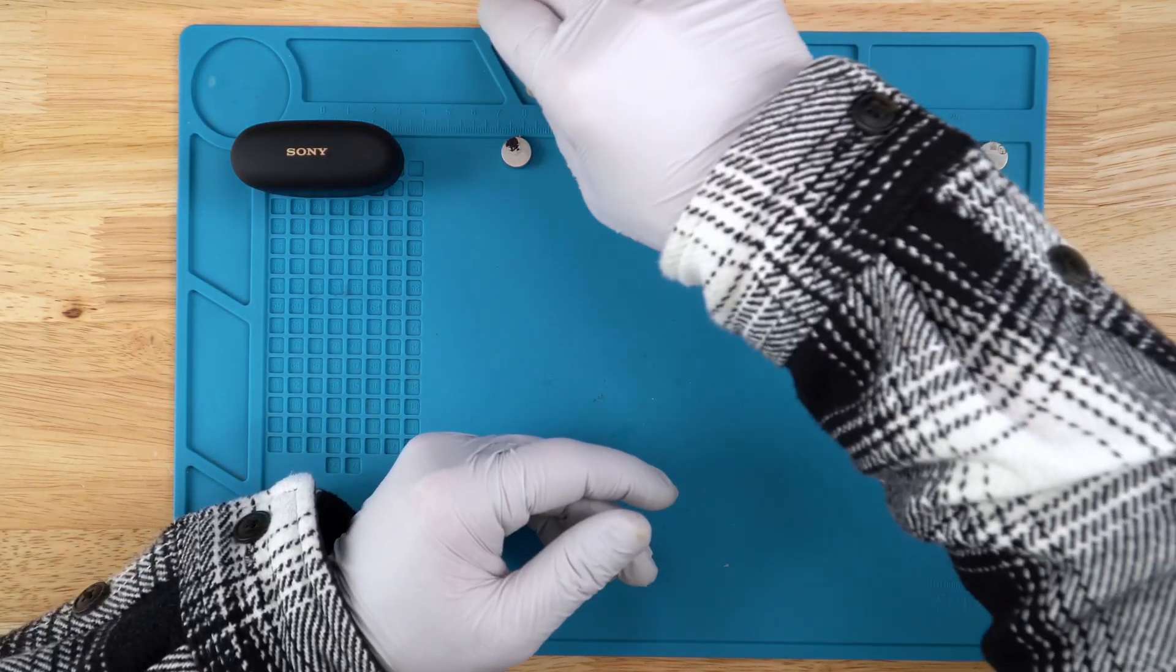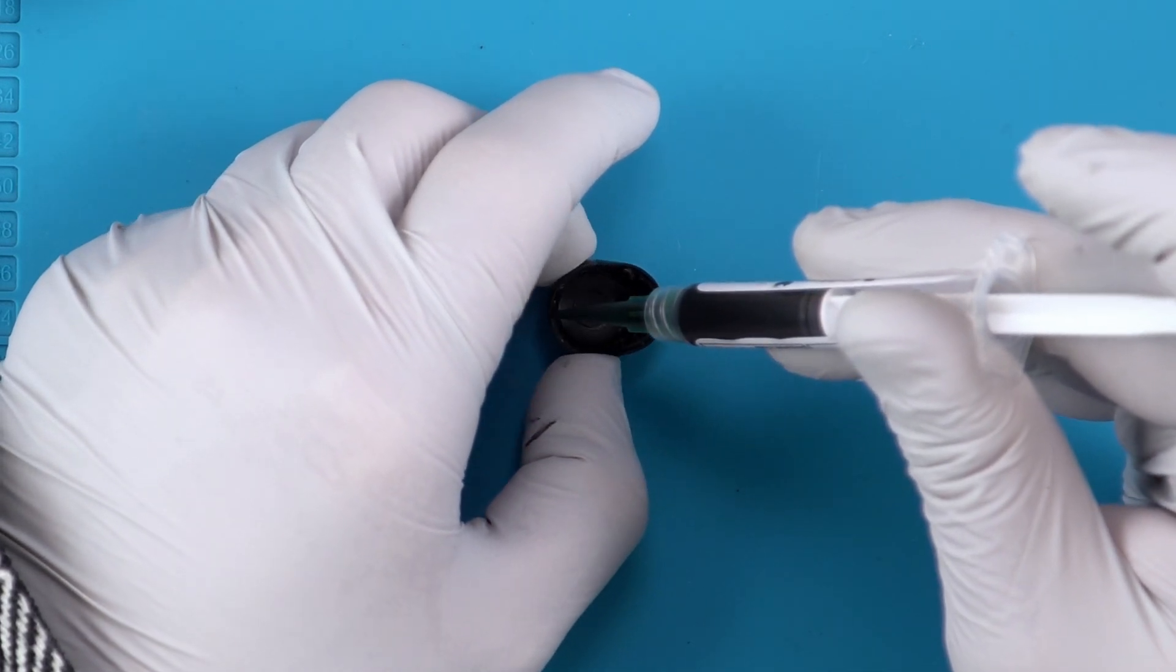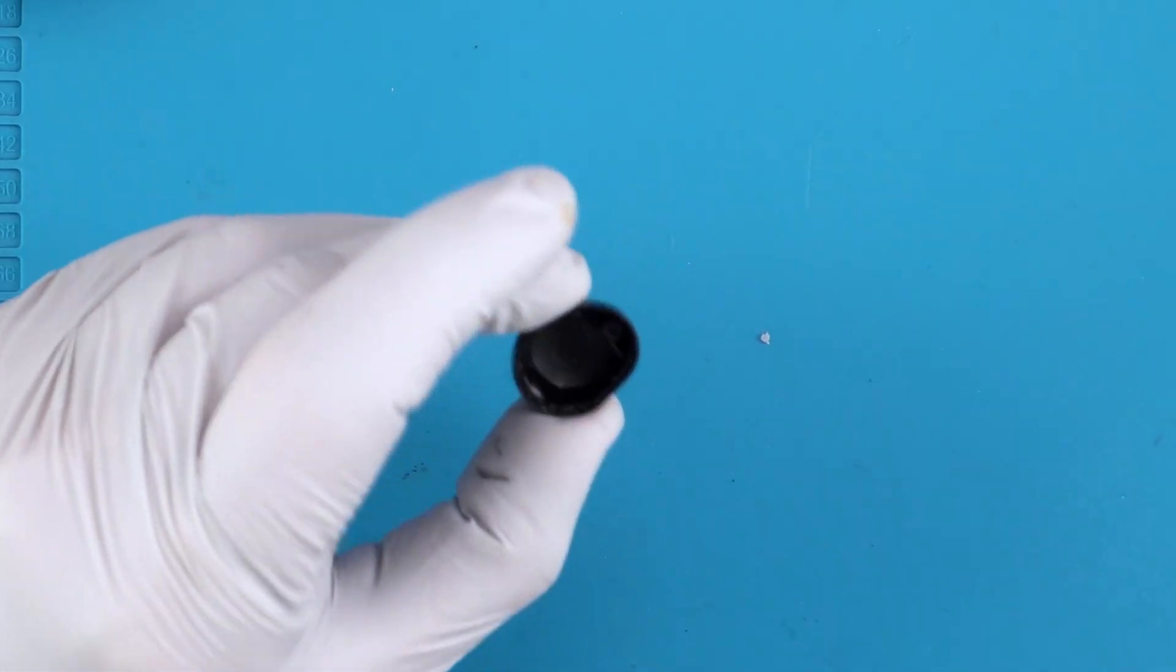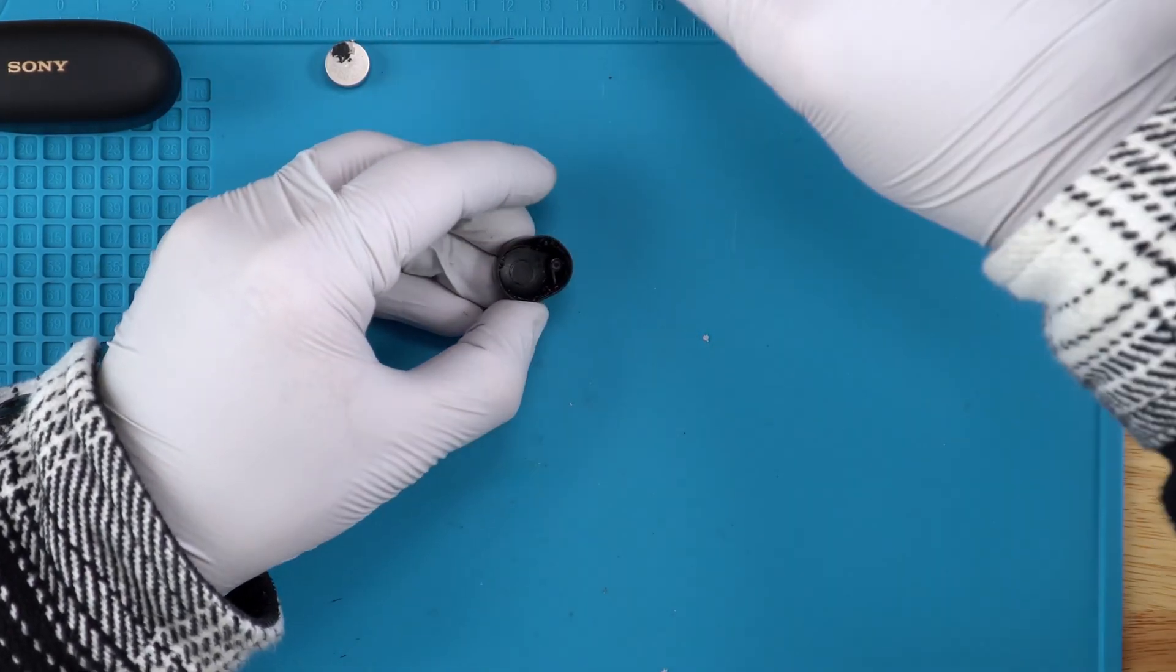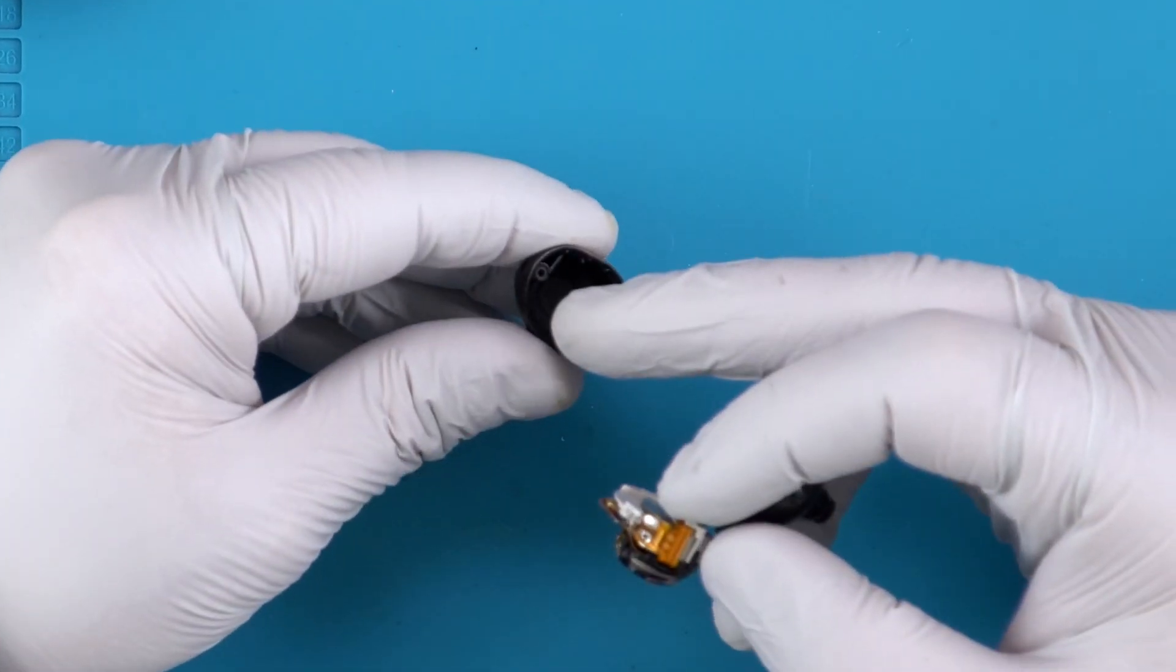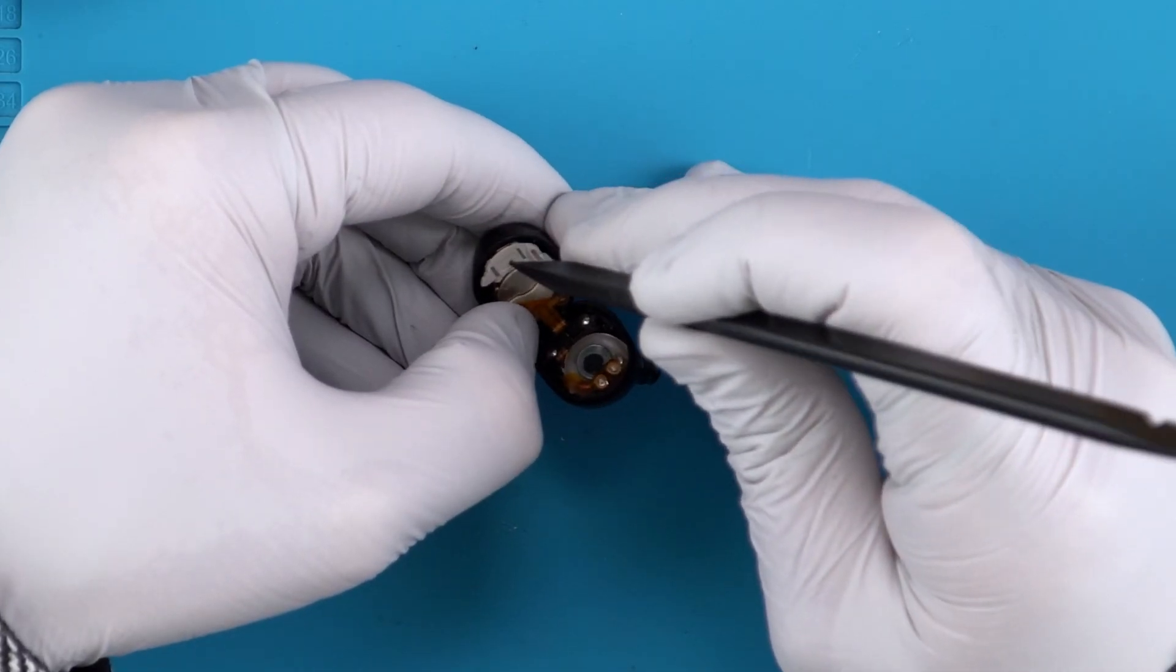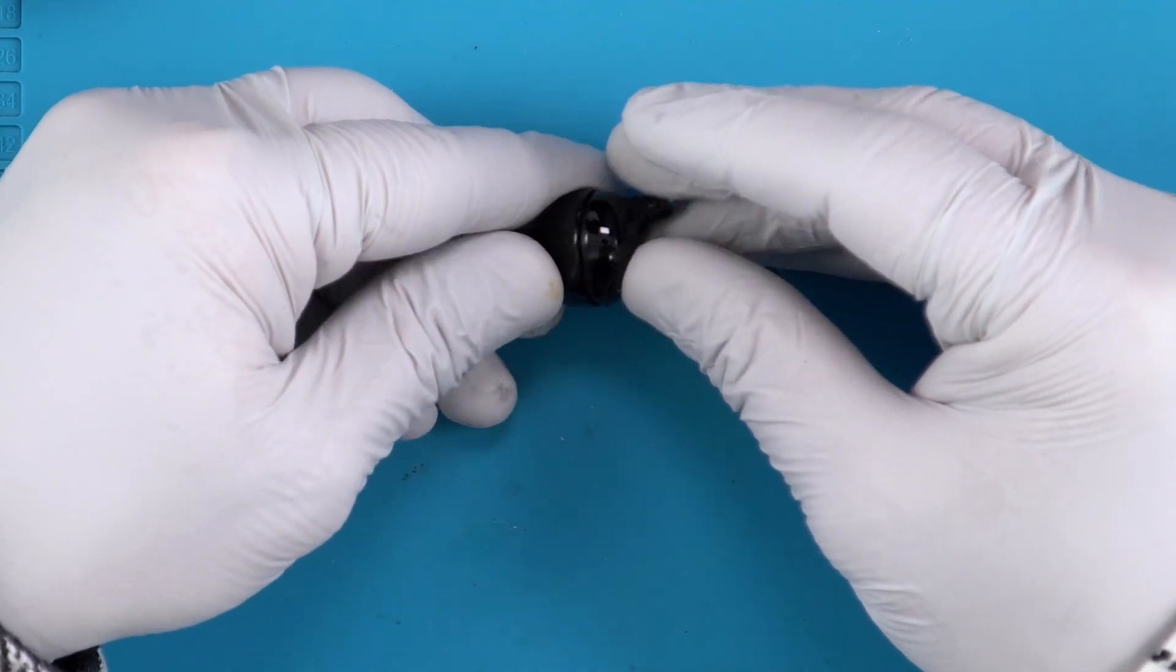All right, so that's our left side complete here. We'll do the same thing for the right side. You can also apply the adhesive before putting the shell in. There we go, so we have a nice bead that goes along the whole edge here where the previous adhesive was sitting. Similar to the left side we'll go ahead and put in our shell and make sure that you line up that microphone with the cutout there for it.